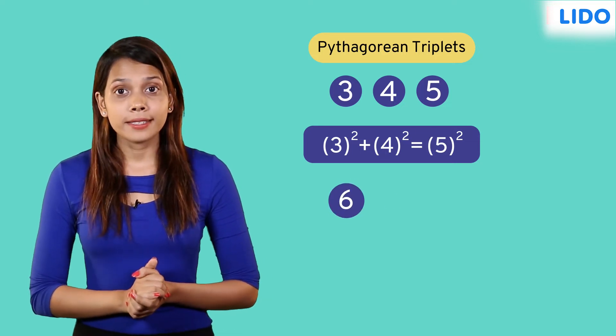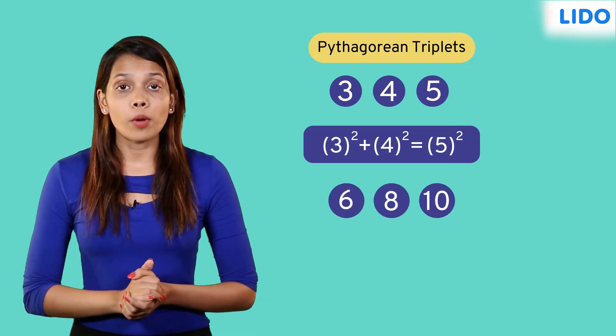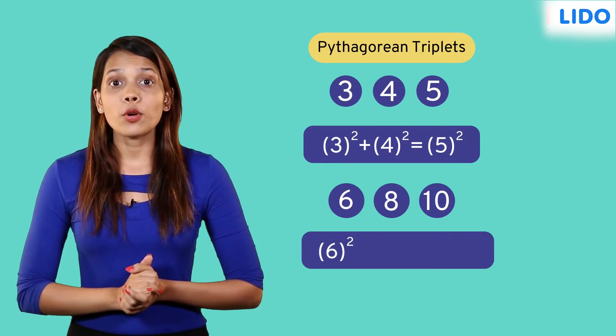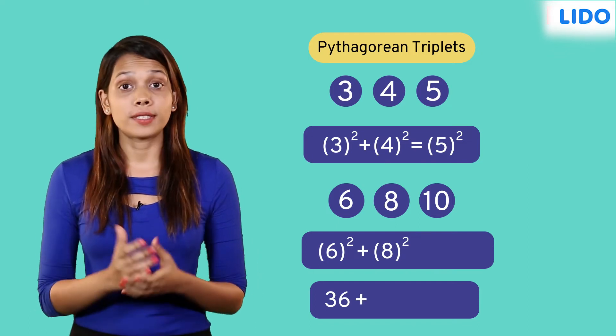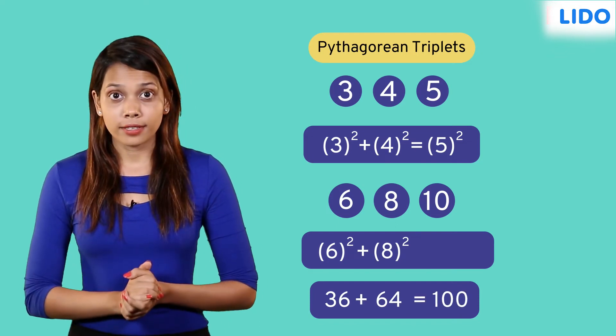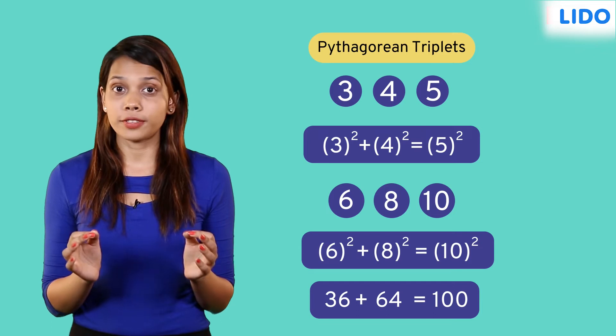For example, 6, 8 and 10 also form a Pythagorean triplet. Because the square of 6 which is 36 added to the square of 8 which is 64 gives us 100 which is the perfect square of 10.